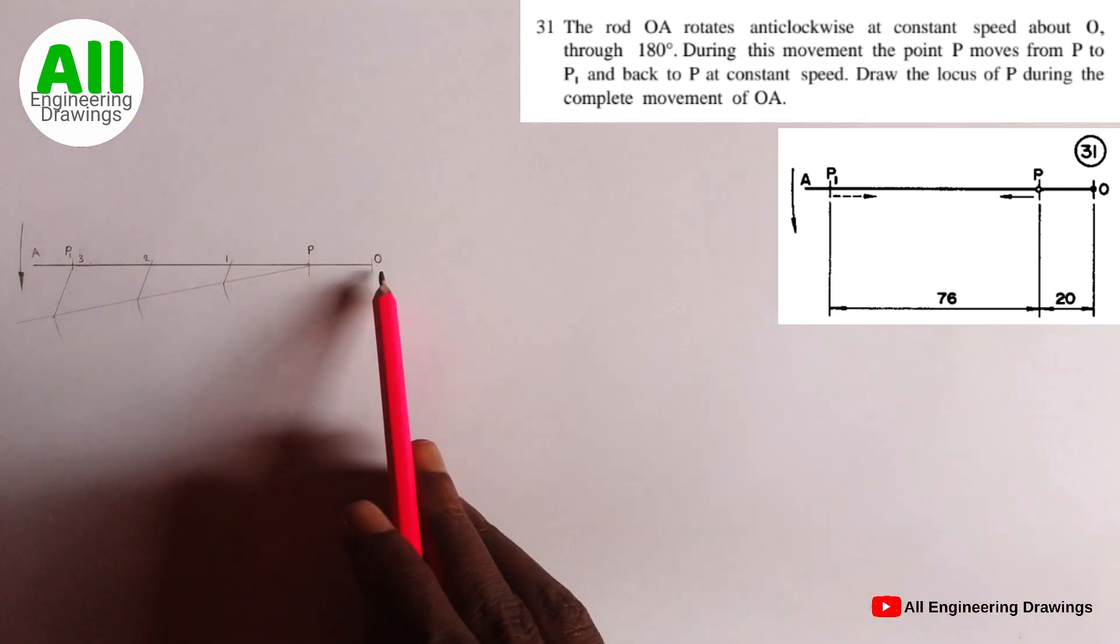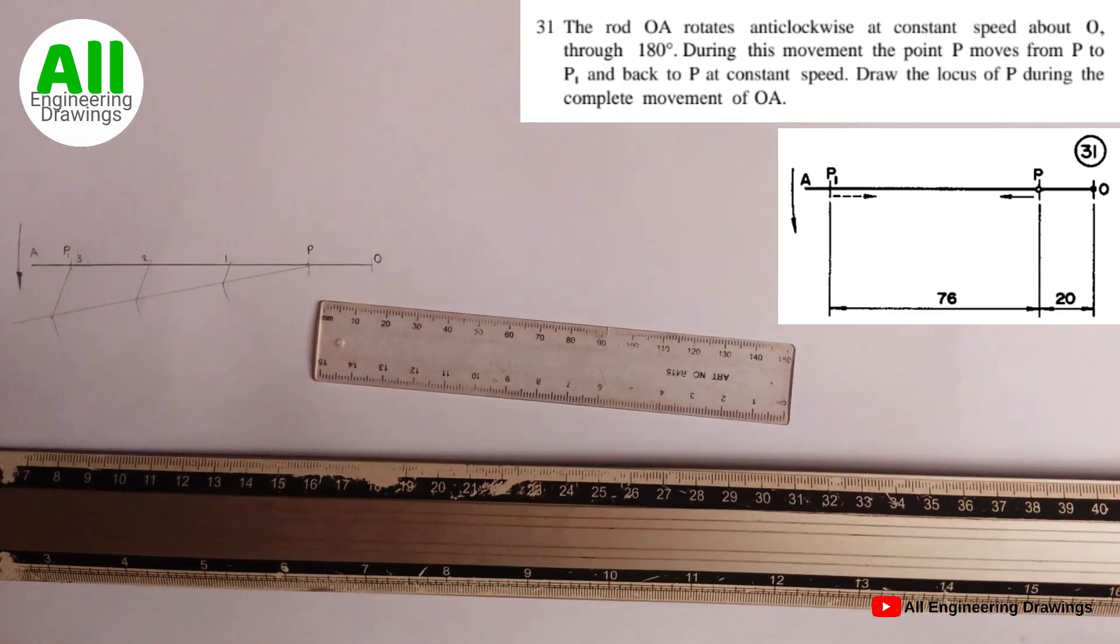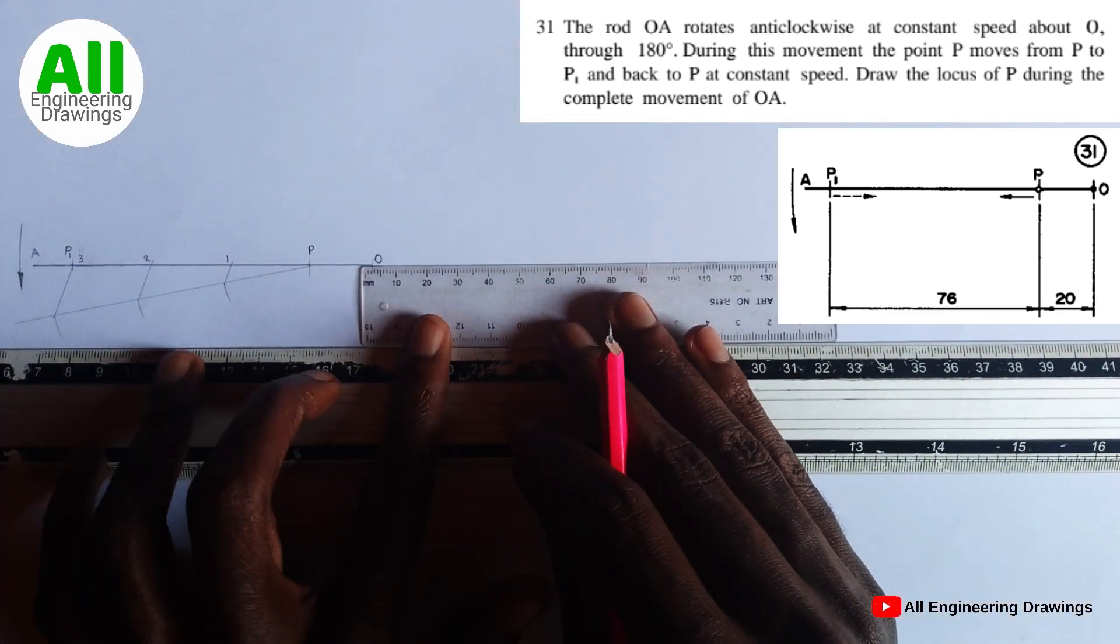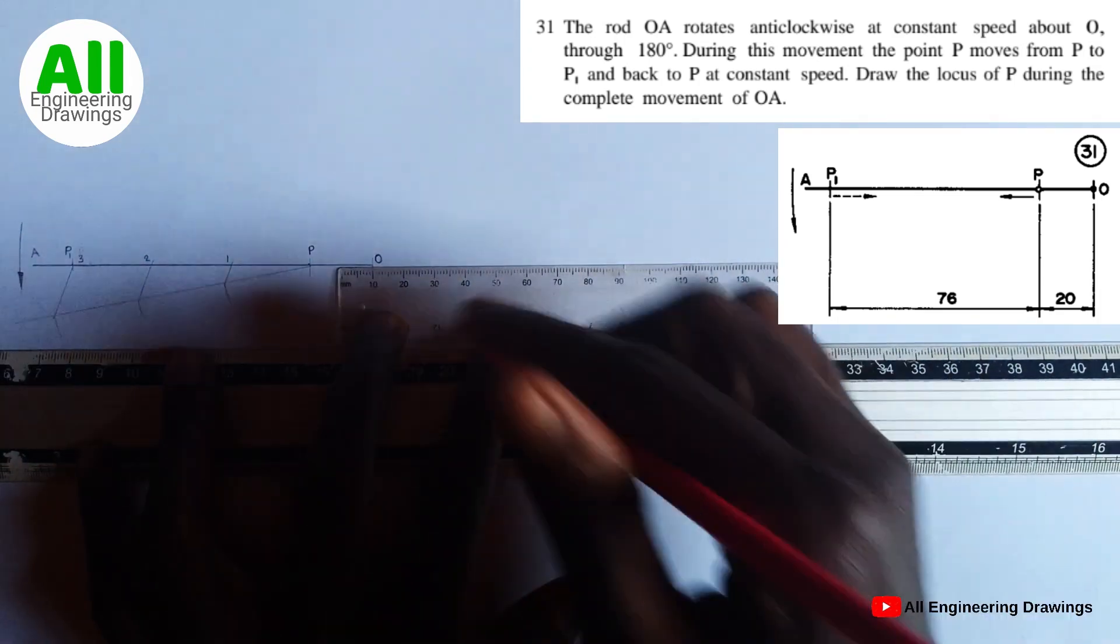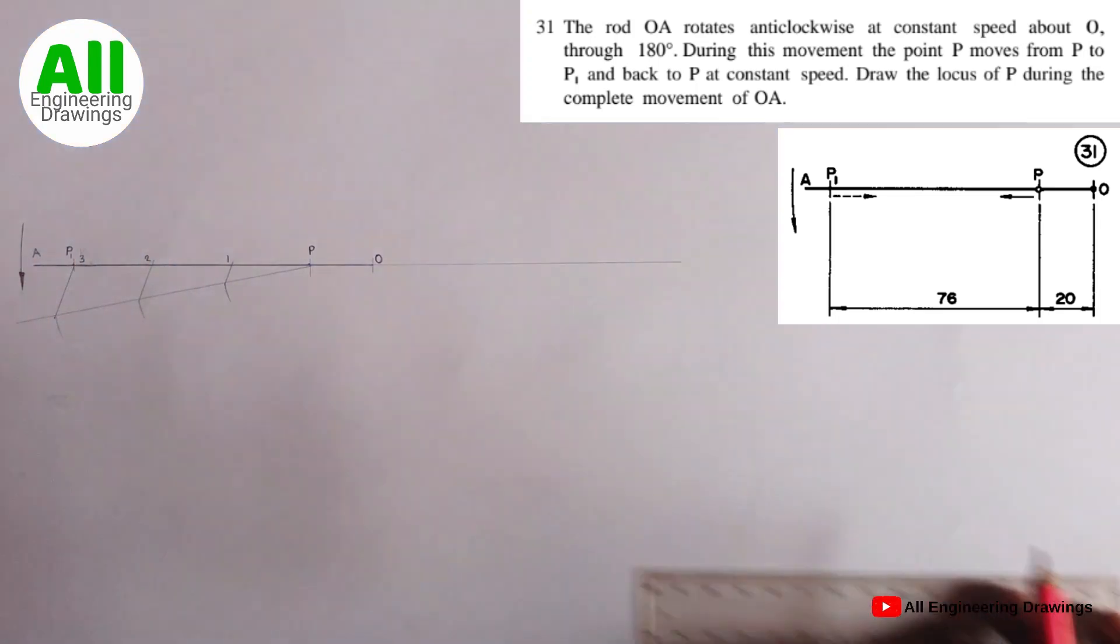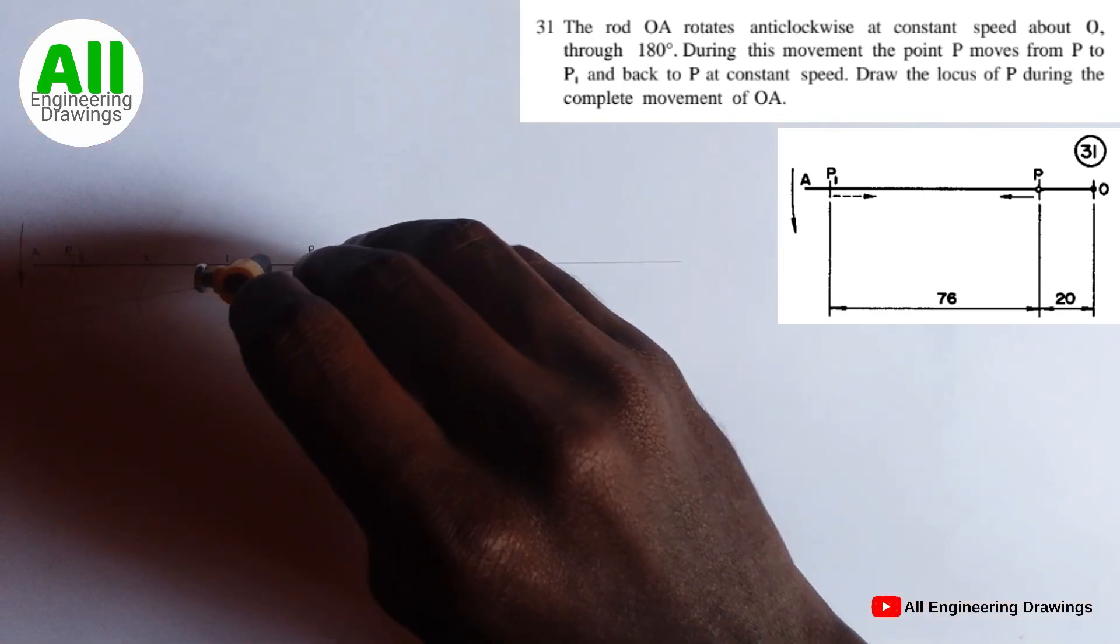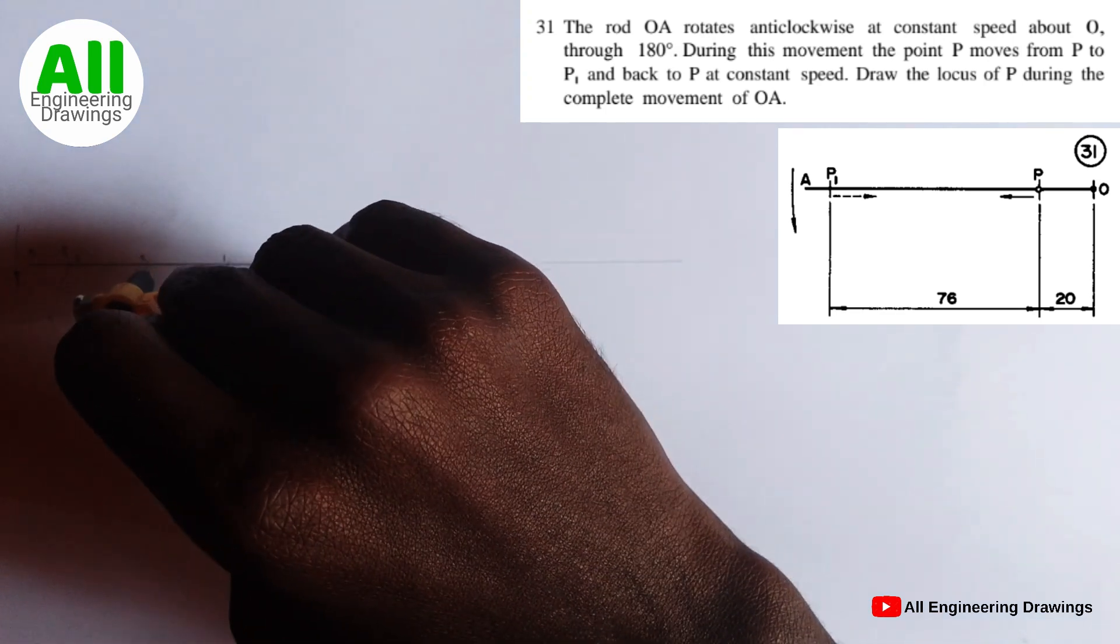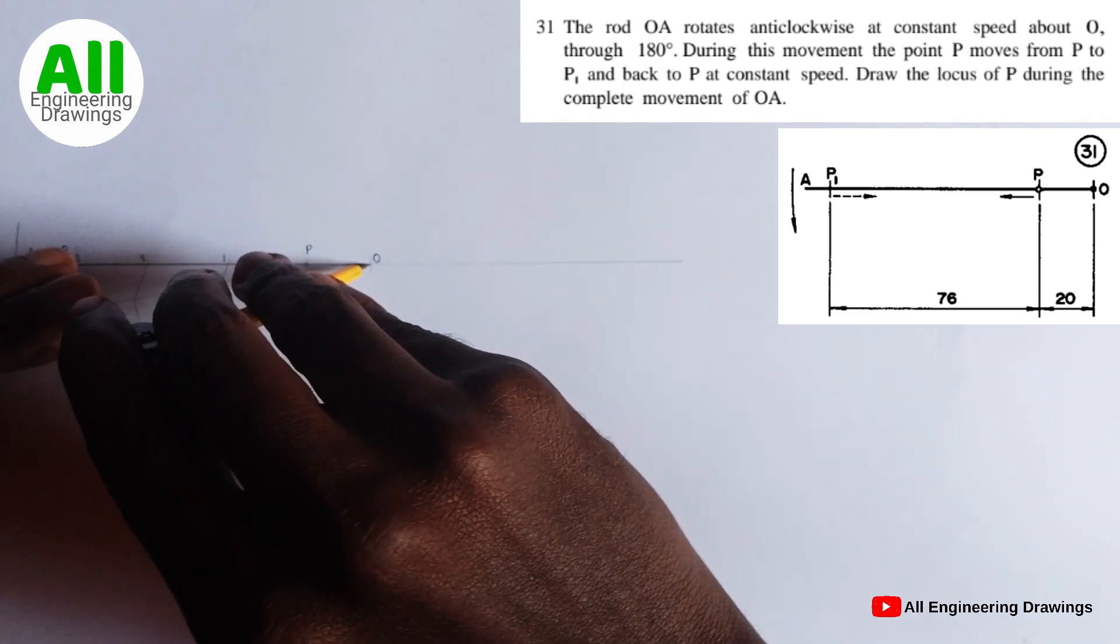Next, extend this line here, that is this line A-O. So after extending the line, place your compass on point O. So after placing the compass on point O, adjust the compass in such a way that the pencil is on point P1.